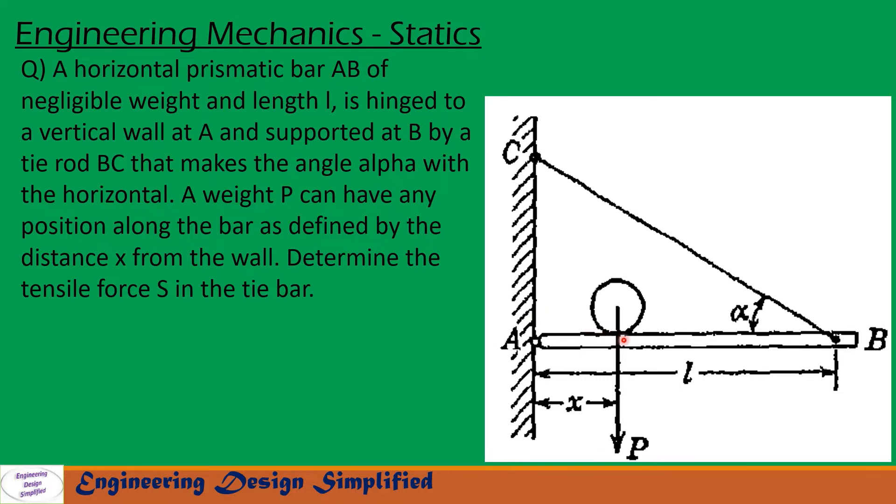In today's problem, given is a horizontal prismatic bar AB of length L and negligible weight hinged at A, and at B there is a tie rod BC attached.